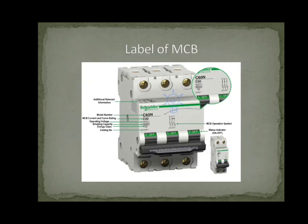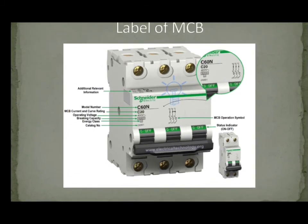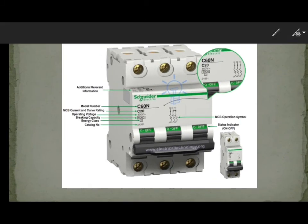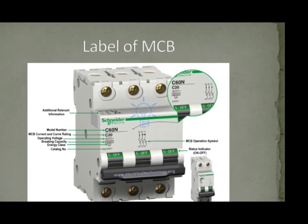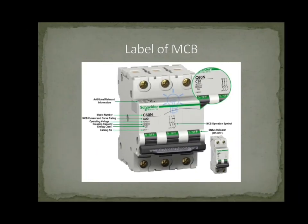Label of MCB. Additional relevant information on the MCB label includes: model number, MCB current and curve rating, operating voltage, breaking capacity, energy class, catalog number, MCB operation symbol, and status indicator (on/off).